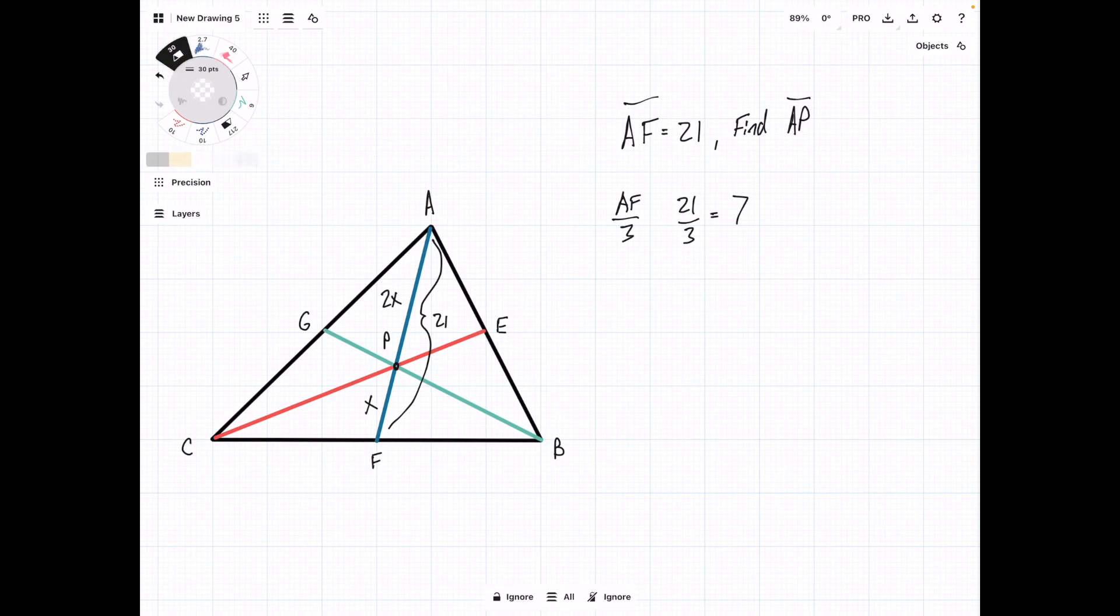So this is going to equal x and then we're going to have 2x equals 2 times 7 equals 14. And that's going to be line AP.